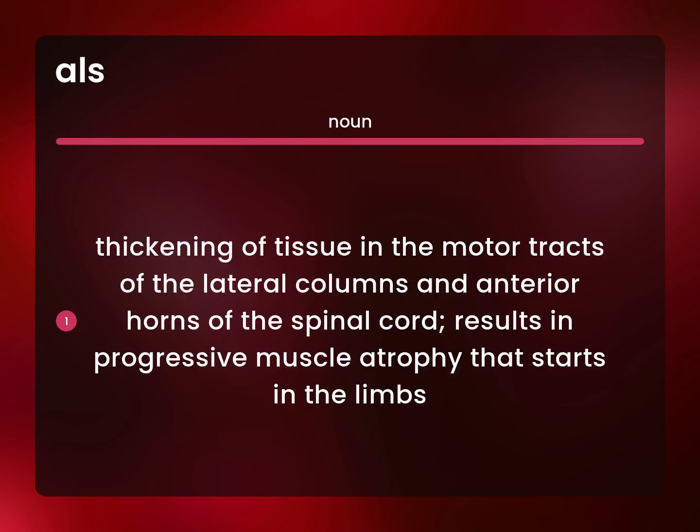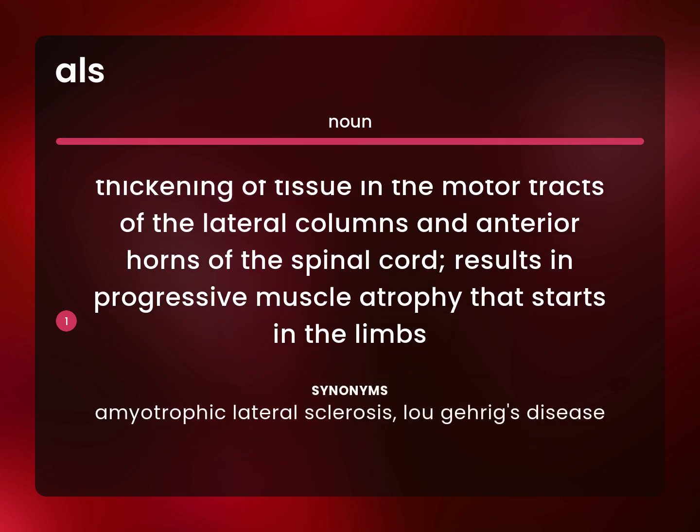Thickening of tissue in the motor tracts of the lateral columns and anterior horns of the spinal cord results in progressive muscle atrophy that starts in the limbs. Amyotrophic Lateral Sclerosis, Lou Gehrig's Disease.